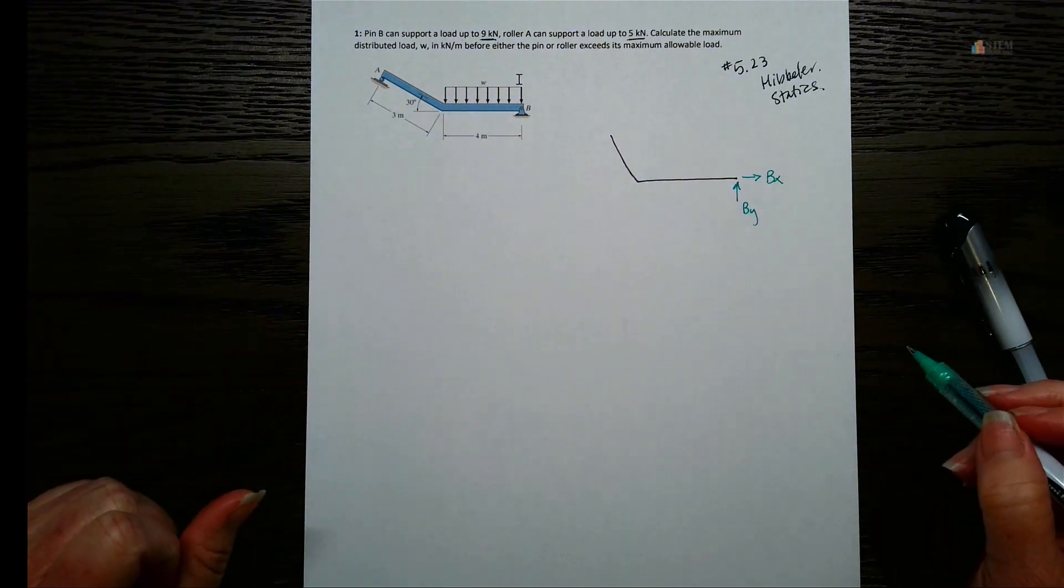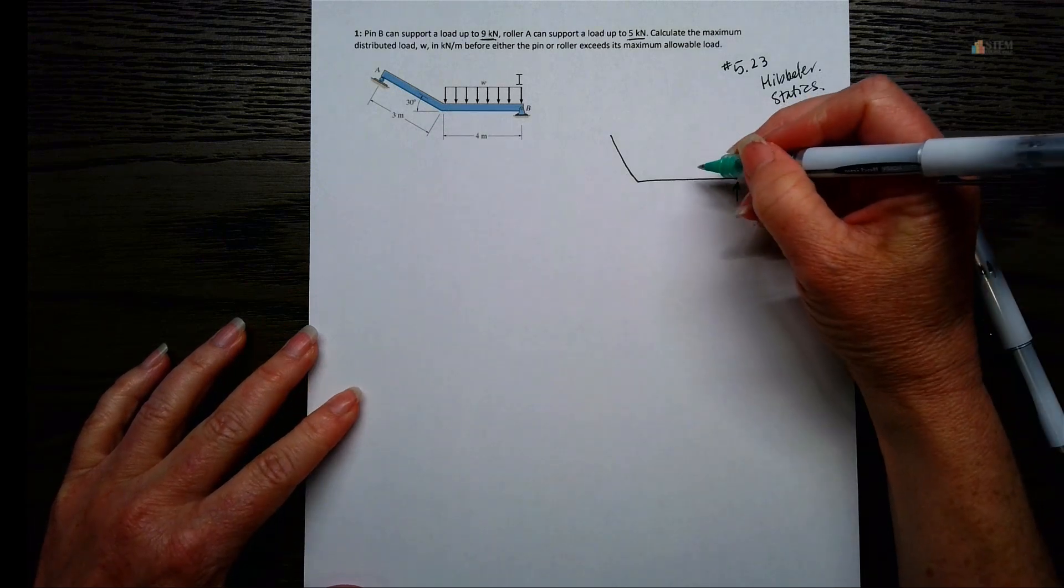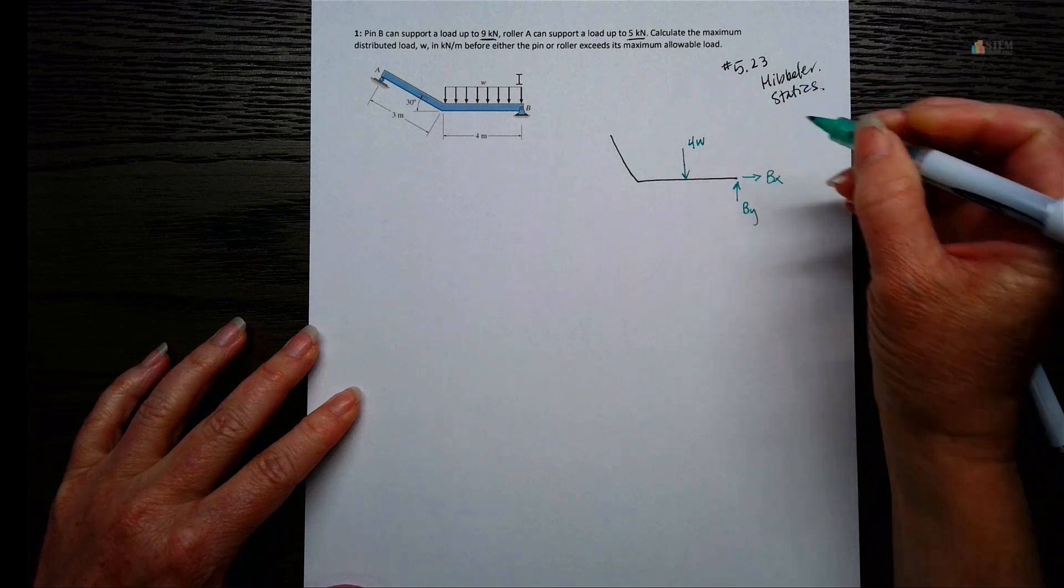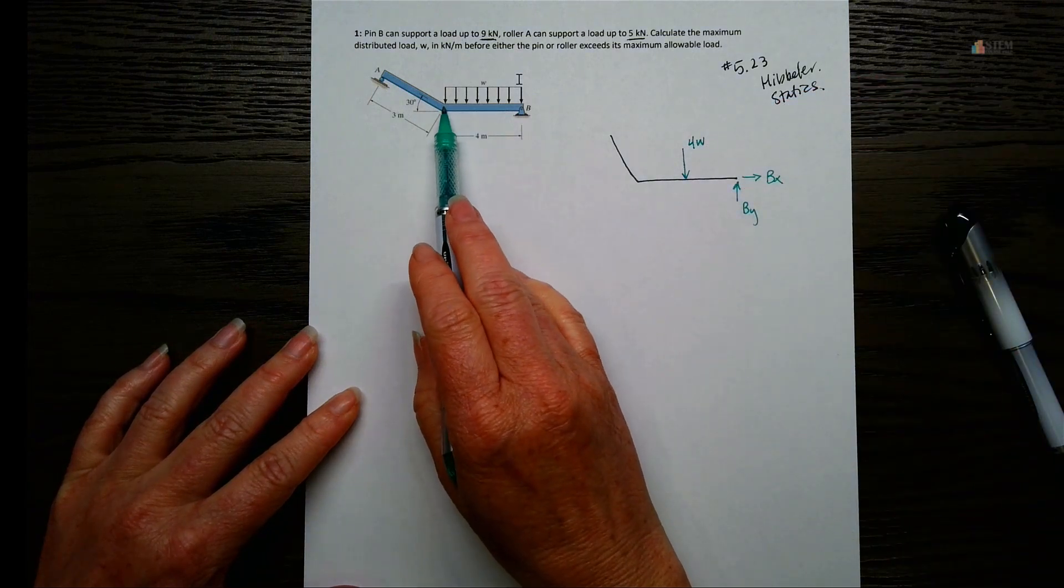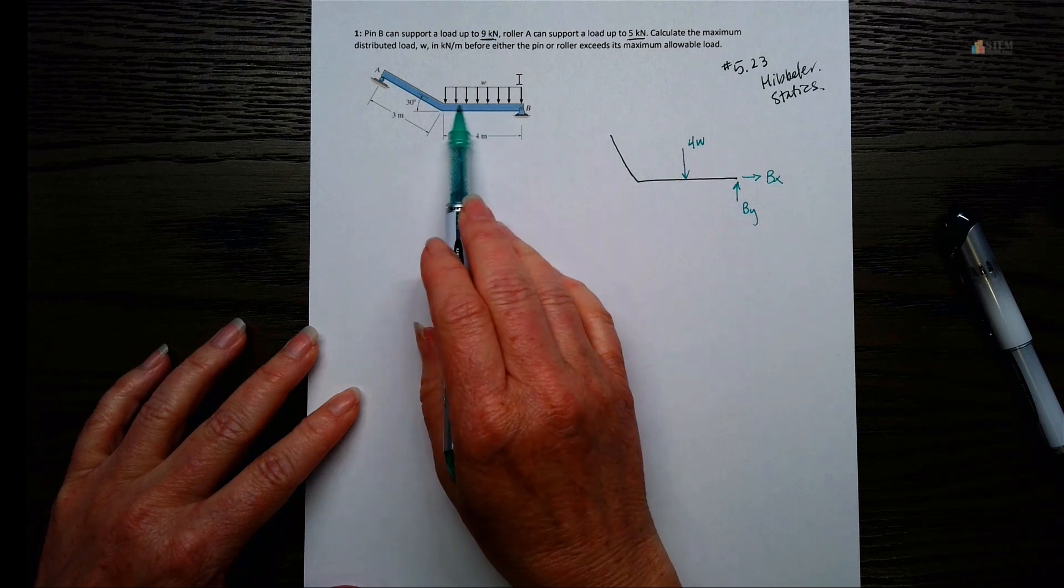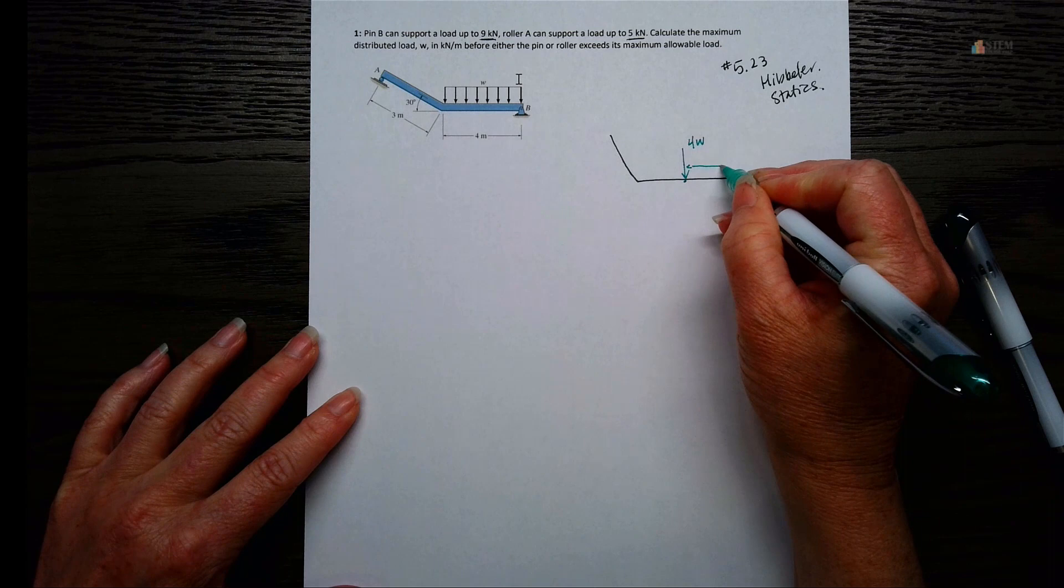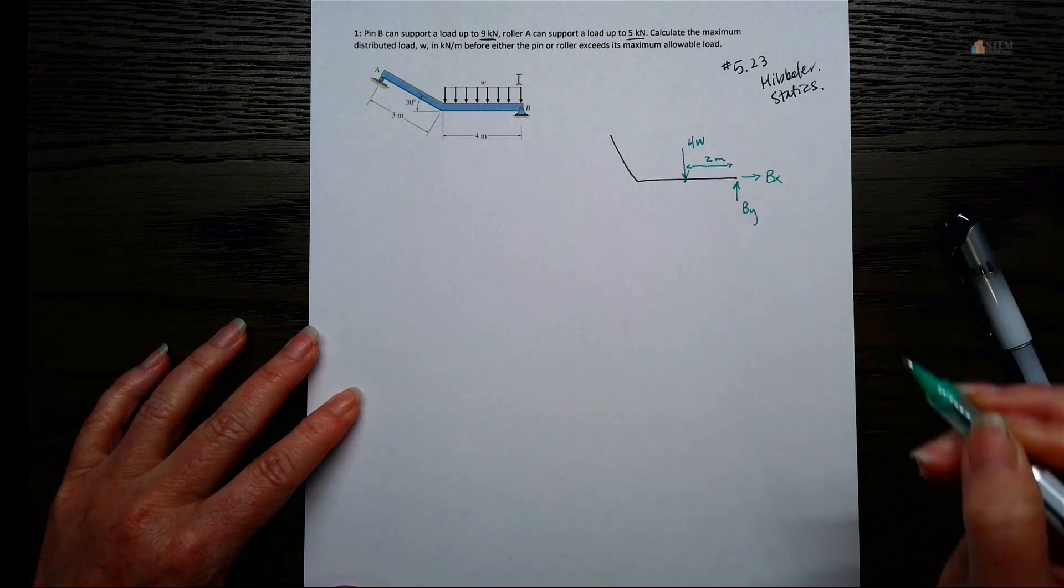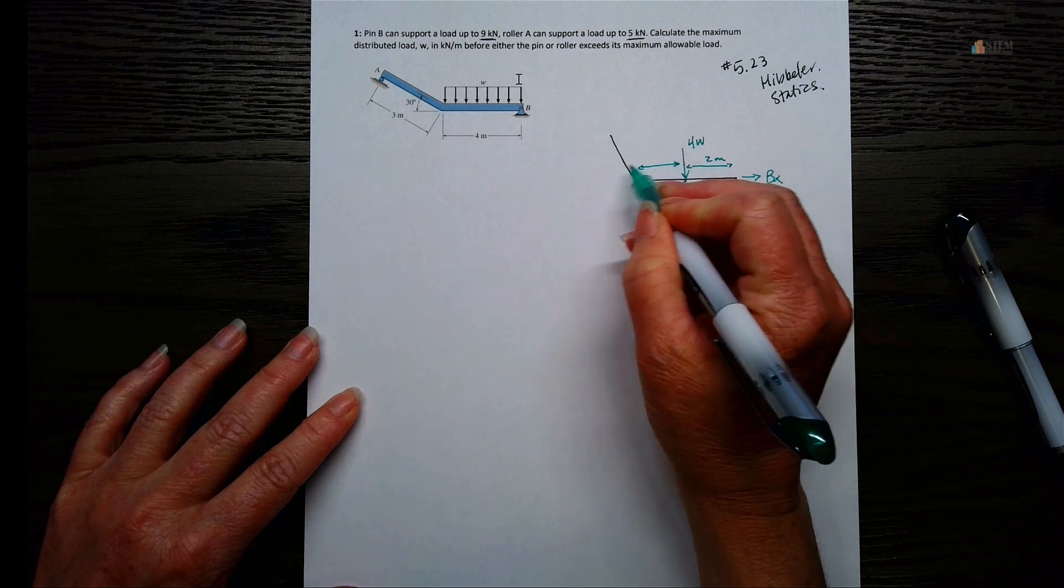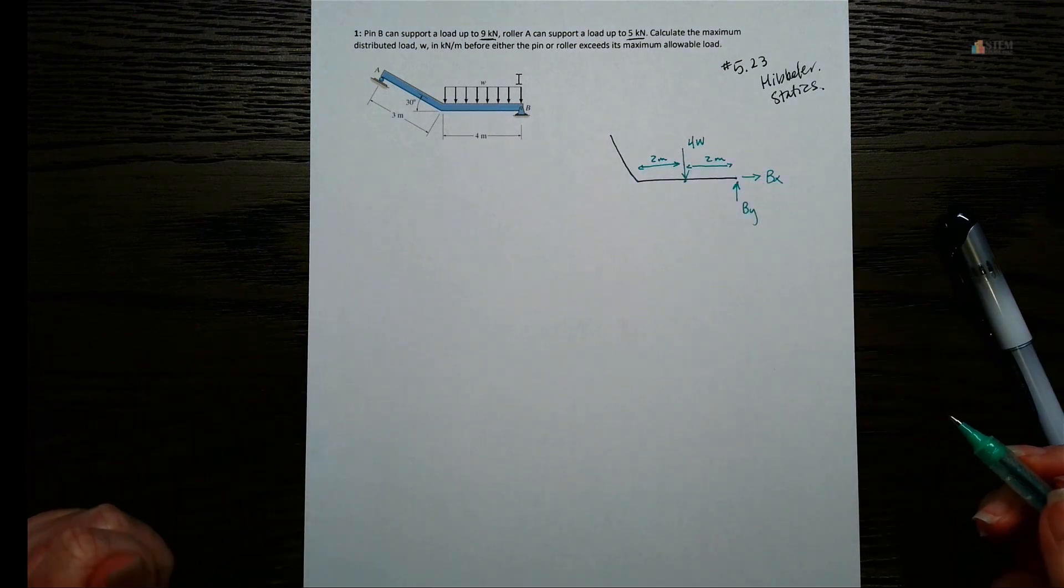We have two conditions here that we have to make sure we meet. We can't go beyond 9 for the pin and we can't go beyond 5 for roller A. So keep that in mind as we work through this. This is an equilibrium problem. So I want to go through and draw the free body diagram. Let's do that first.